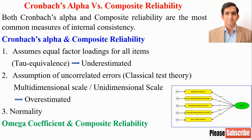If any of these assumptions is violated, then Cronbach alpha is no longer a valid estimate for internal consistency, and we can go for the omega coefficient or composite reliability instead.